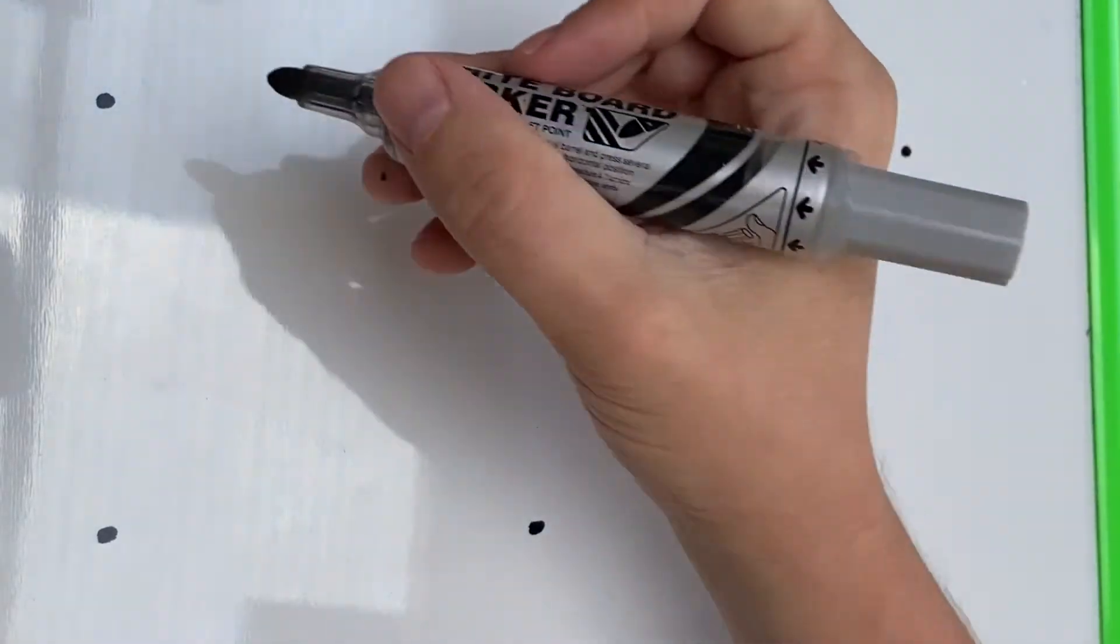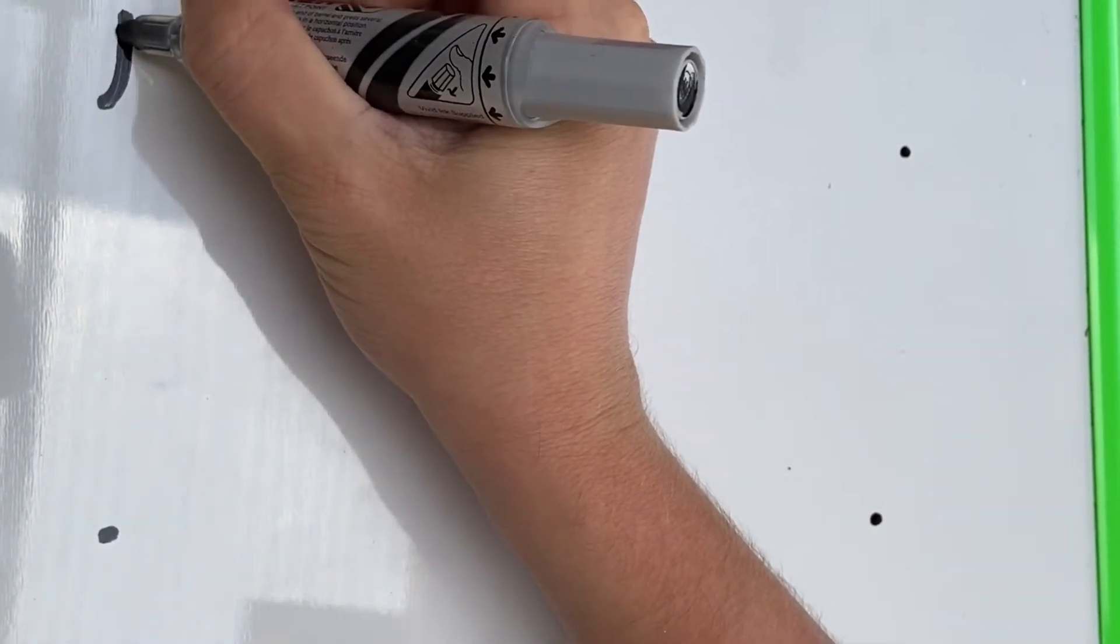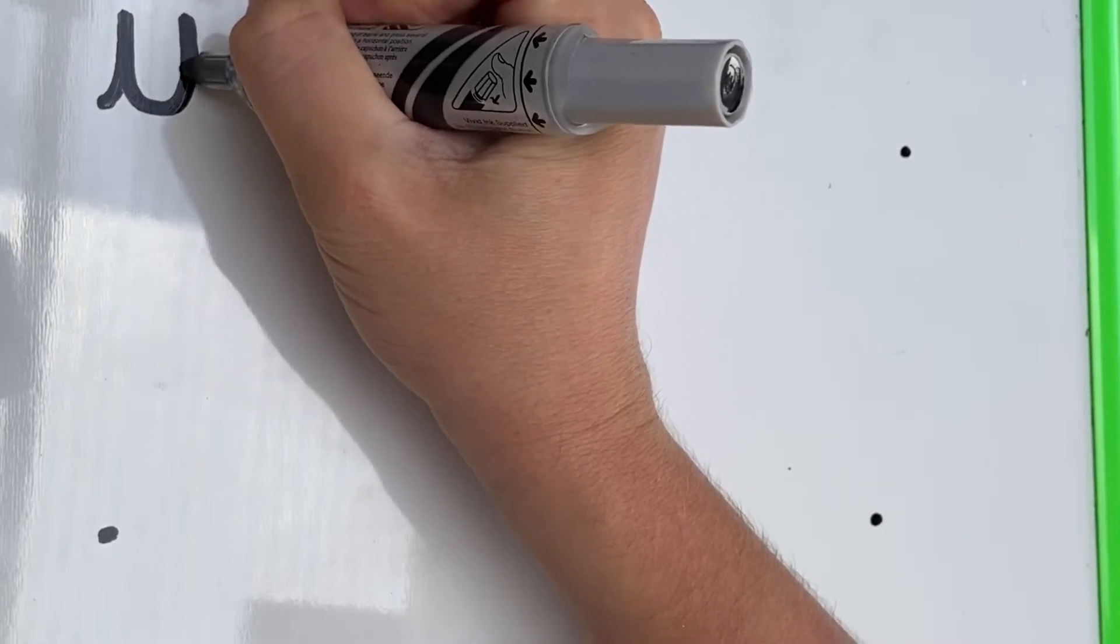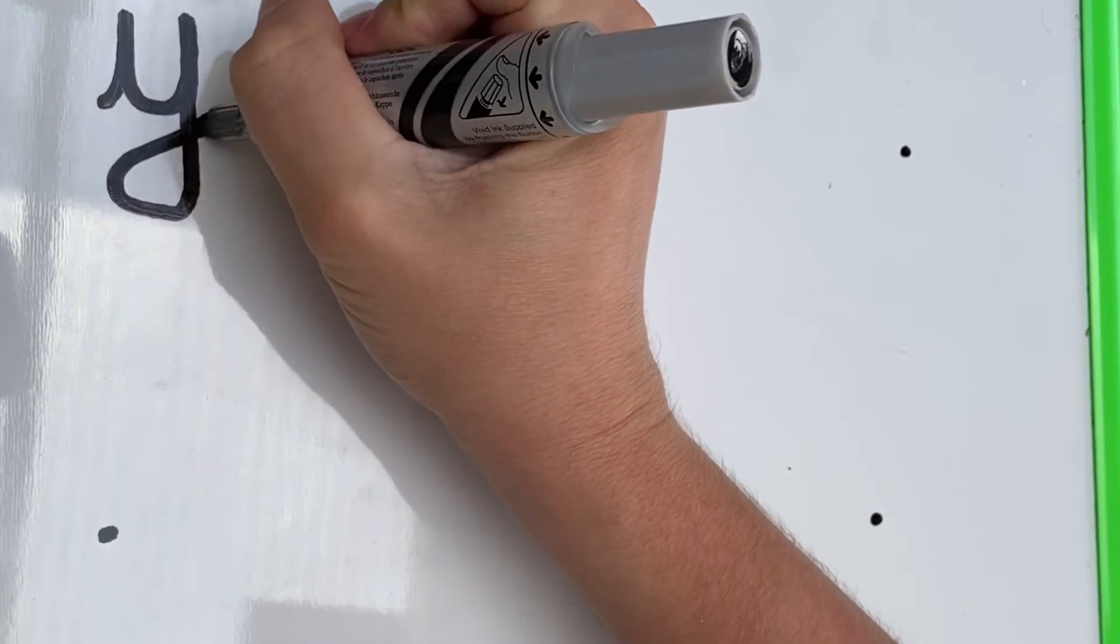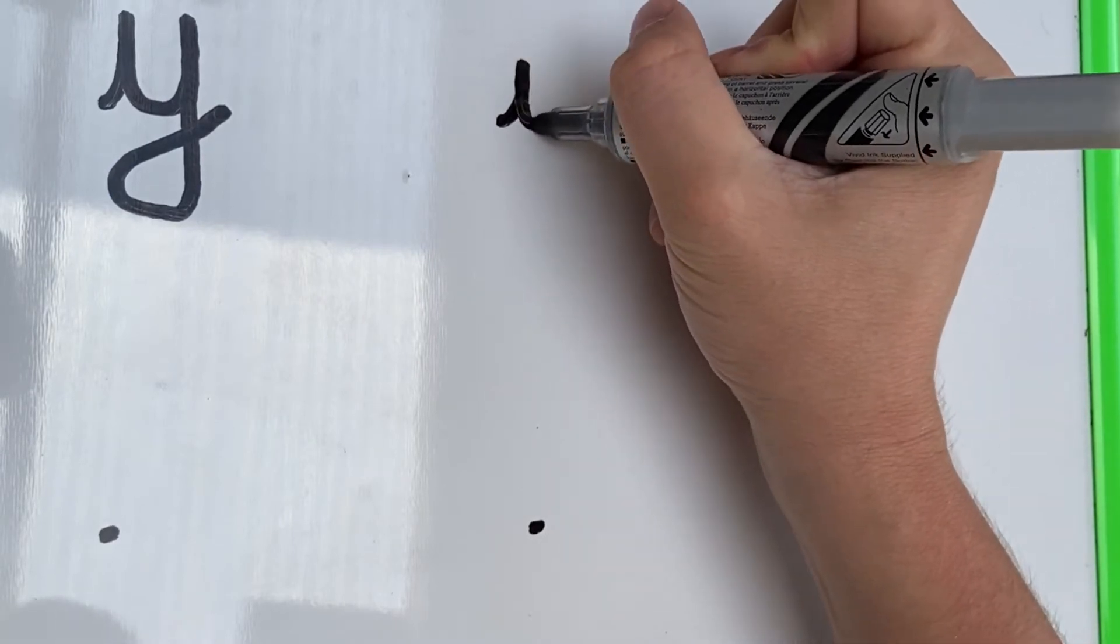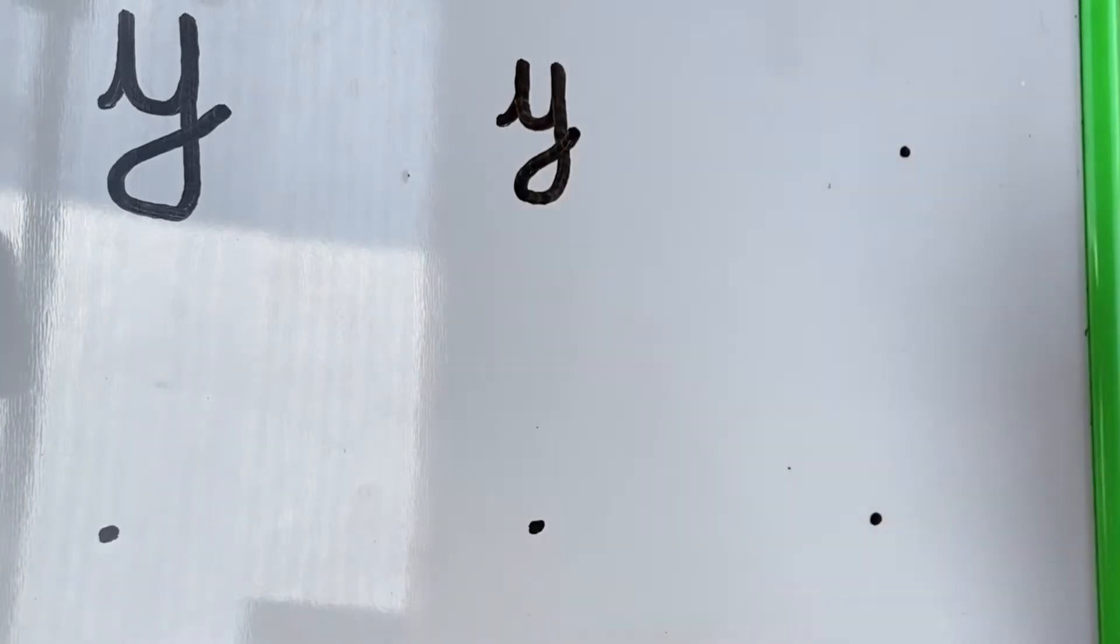Now have a go at drawing six letter Ys. Start each letter on the dot. So we go up, down and round, up, down and under, loop and hook. Starting on the dot, up, down and round, up, down and under, loop, hook.